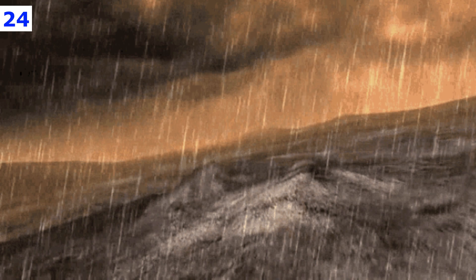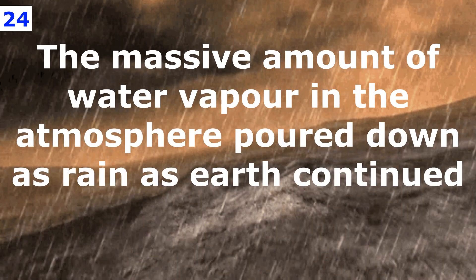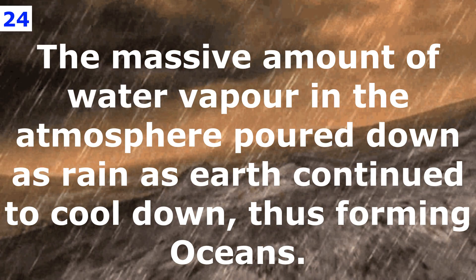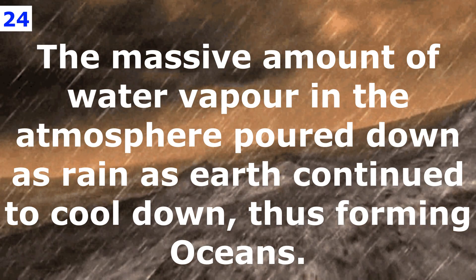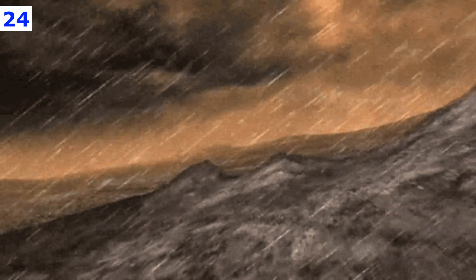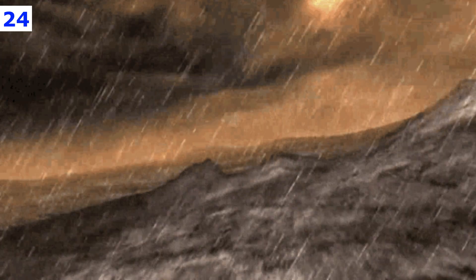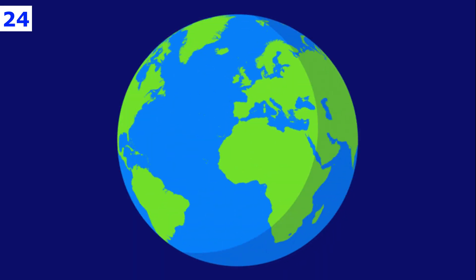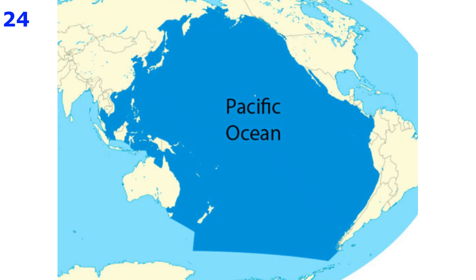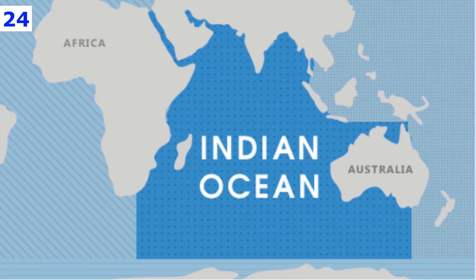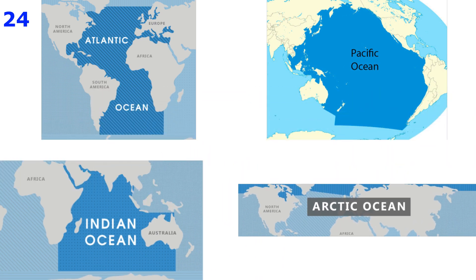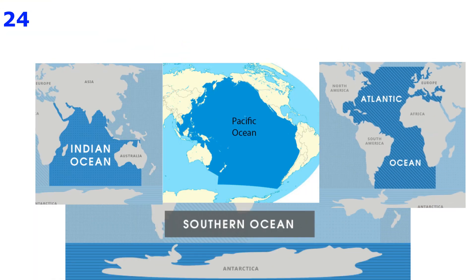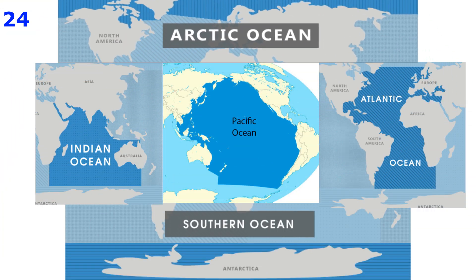It is believed that the ocean formed when the water vapor held in the atmosphere of prehistoric Earth condensed and fell as rain, filling the vast hollows of the Earth's surface. Although the oceans are one continuous body of water, geographers have given it different names: the Pacific Ocean, the Atlantic Ocean, the Indian Ocean, and the Arctic Ocean. The waters around Antarctica are sometimes described as an ocean.